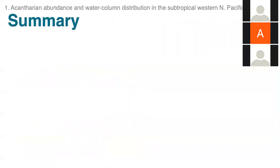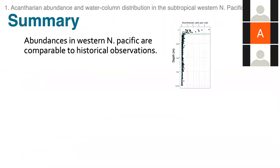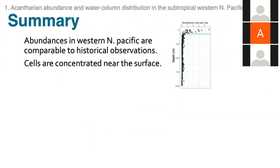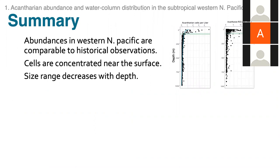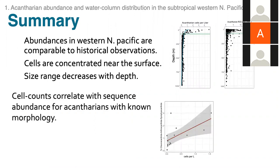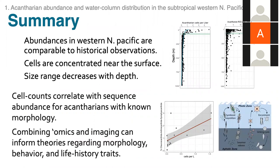In summary for Chapter 1: acantharian abundances in the western North Pacific were comparable to historical observations in other regions. Cells were concentrated near the surface and size range decreased with depth. Cell counts correlated with sequence abundance for acantharians with known morphology, but not for those without known morphology. By combining omics with imaging, we can inform theories regarding morphology, behavior, and life history traits.